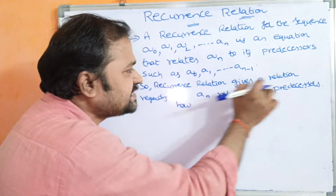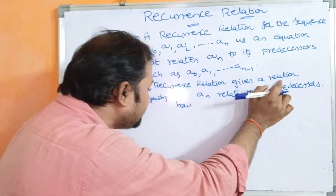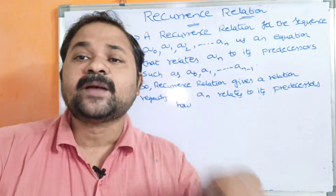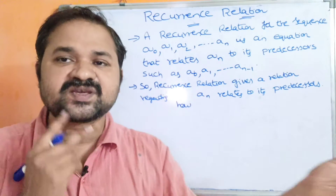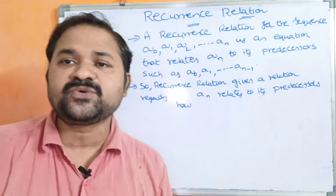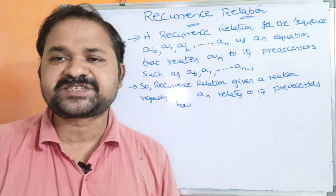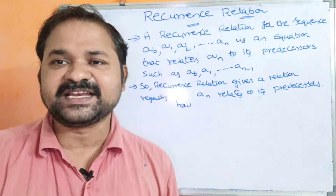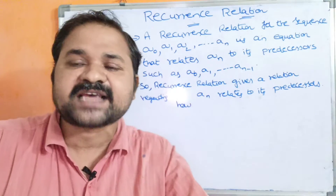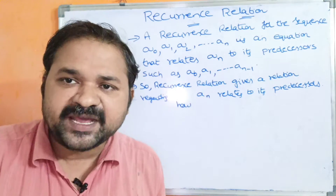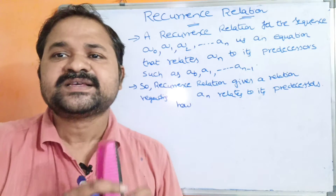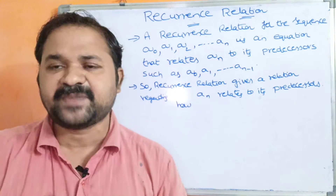So, a recurrence relation is a relation regarding how an relates to its predecessors — its previous items from a0 to an-1. Here, we are obtaining an from its previous items such as a0 to an-1.